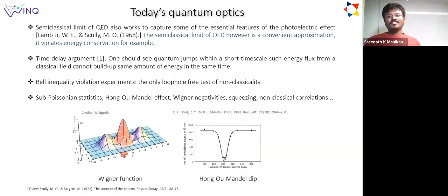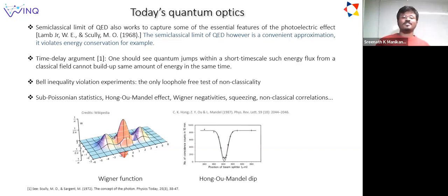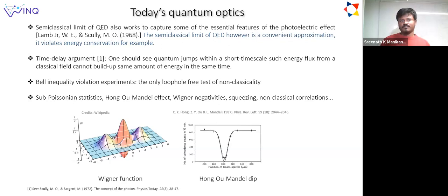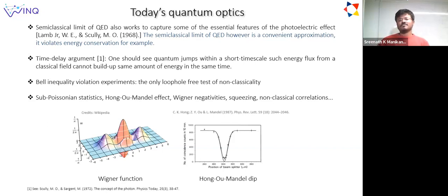If we fast forward to today's quantum optics, things are more developed, and there are new ideas about what quantum optics is today or what a photon is. One interesting input is that a semi-classical limit of QED would also work to capture the essential features of the photoelectric effect. However, this semi-classical limit has certain issues—it is a convenient approximation in the sense that it violates energy conservation. A full description also requires accounting for quantized energy exchanges with matter.